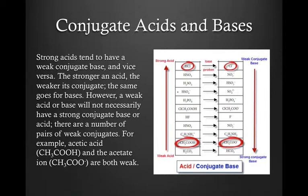Now, strong acids will tend to have a weak conjugate base and vice versa. The stronger an acid, the weaker the conjugate. The same goes for bases.